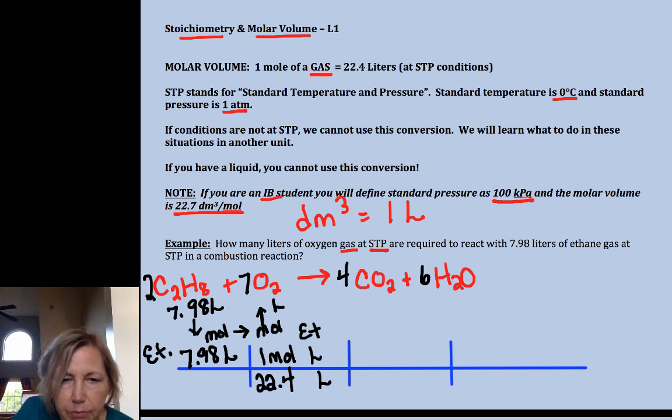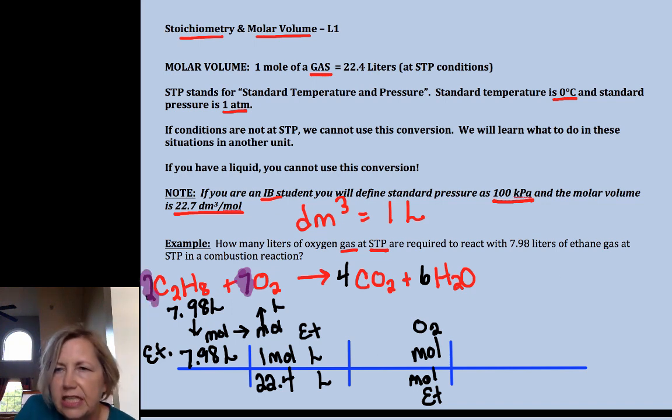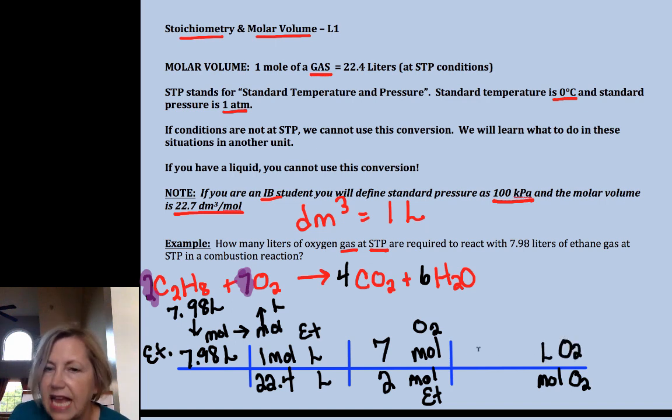Now I want to get moles to moles, so I'll use my magic mole ratio and I want moles of O2. That's where we get that conversion factor from our coefficients. So we have seven for oxygen and a two, so that's seven in front of the oxygen and a two in front of the ethane. And now I want to go to liters, so I want to eliminate moles of oxygen and I want to go to liters of oxygen. Again, it's a gas at STP, so I can use 22.4 liters per one mole.